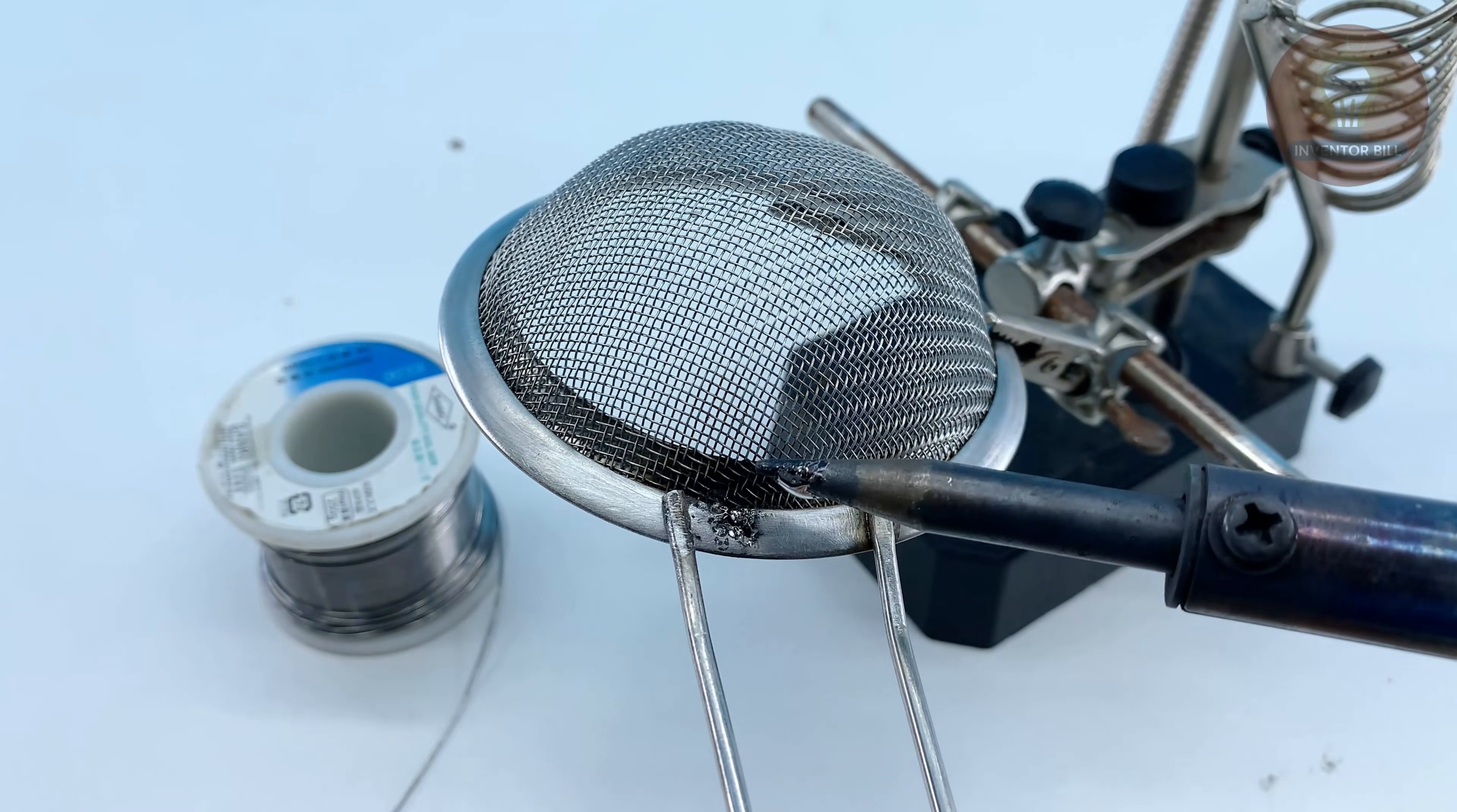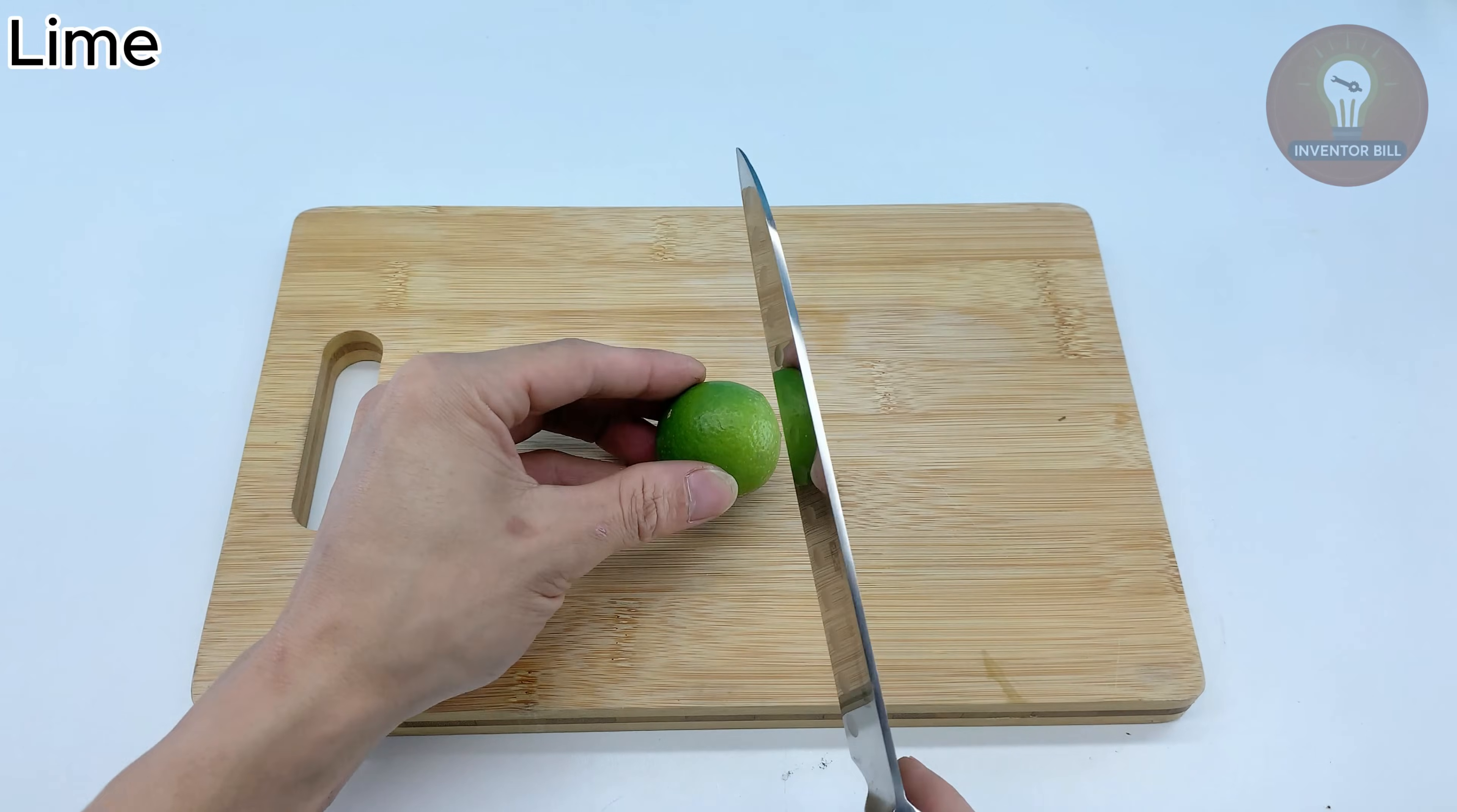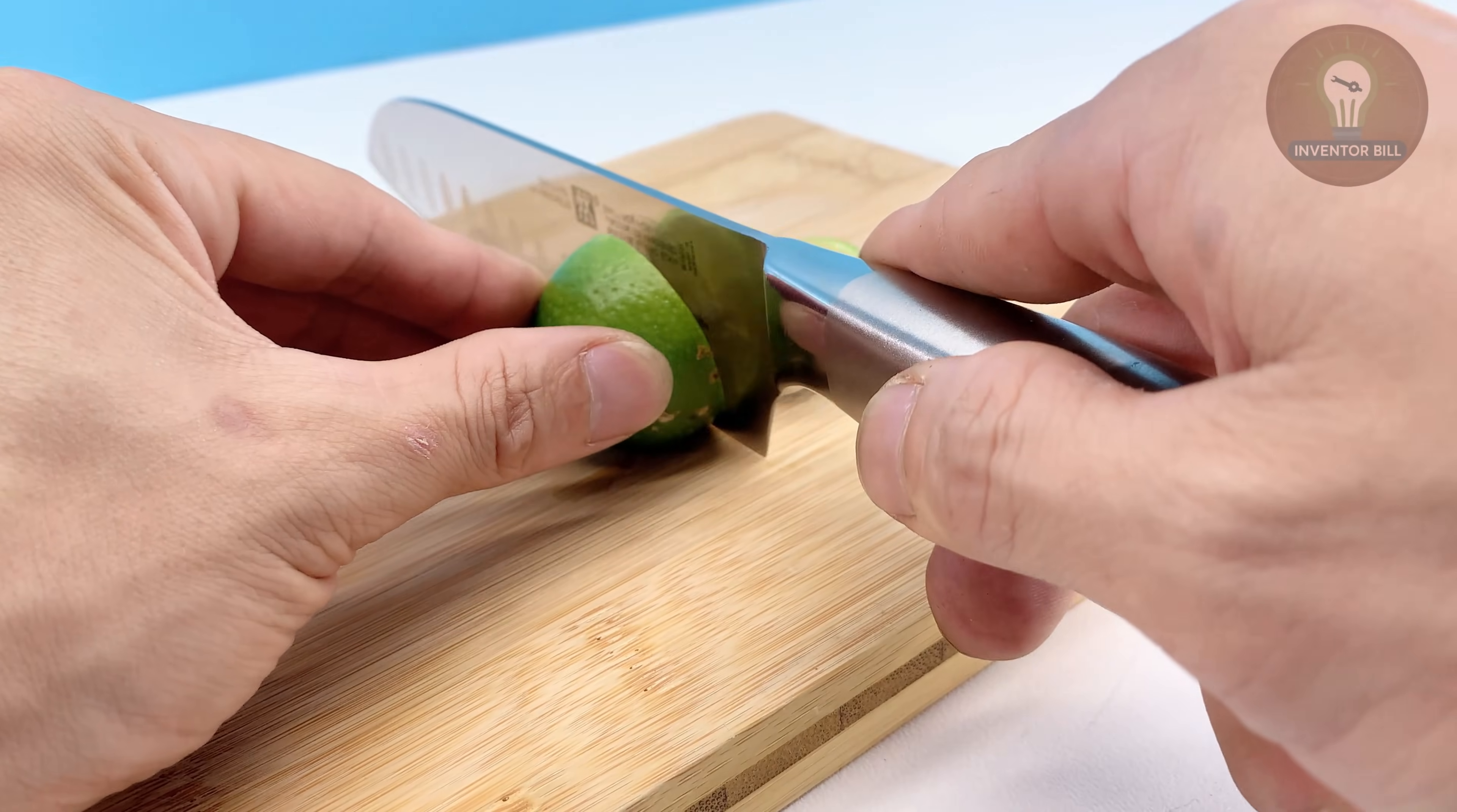Sometimes even a clean soldering tip struggles to stick to certain metals, like stainless steel filters or thin wires. When that happens, you can make a simple homemade flux.